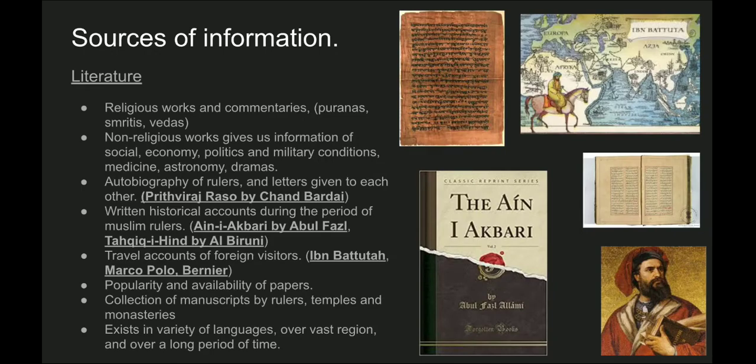Now, what are the sources of information — that is, from where do we get our knowledge about history? There are two or three kinds of sources: first are the literary sources, then there are the architectural sources, and there are some others like paintings. So the first are the literary sources.